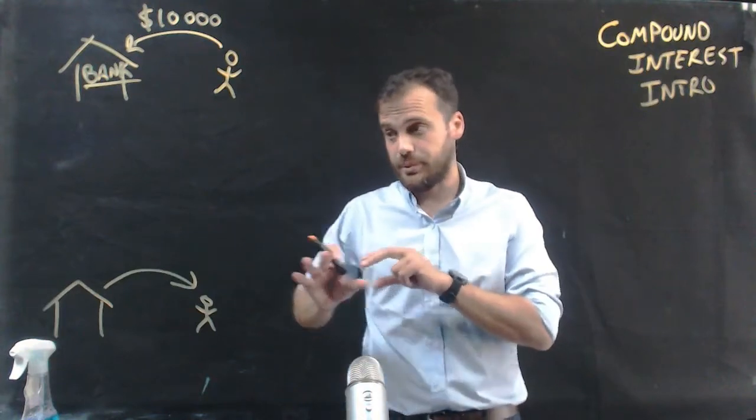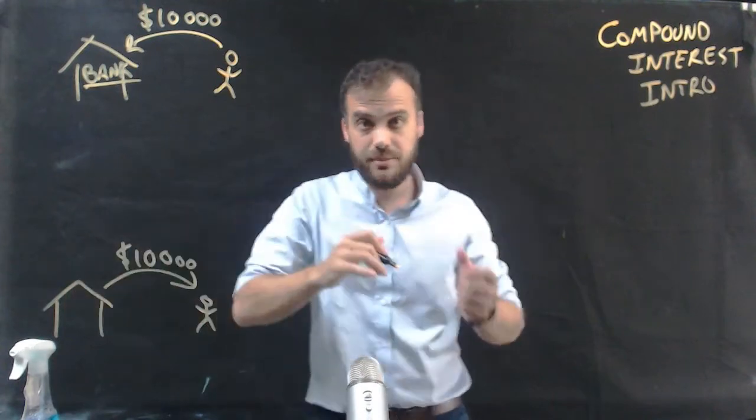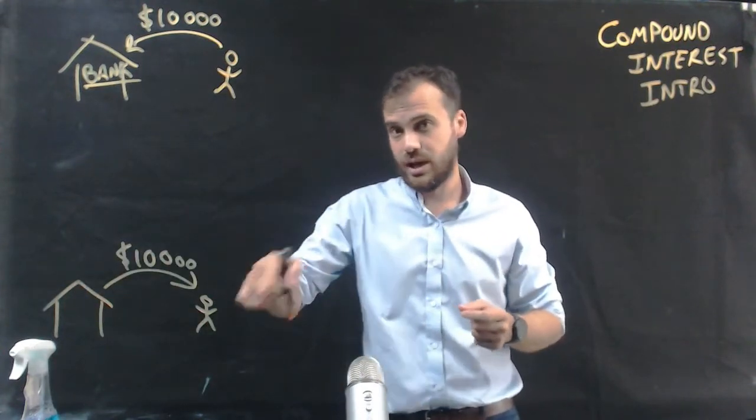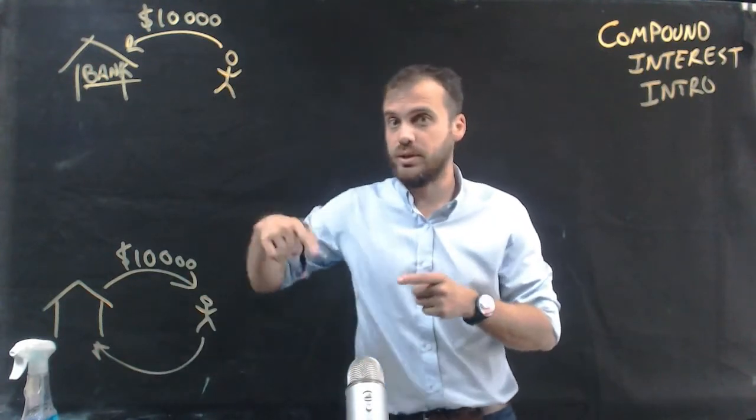What actually happens is the bank lends your $10,000 to other people and then those other people eventually give it back to the bank with interest.